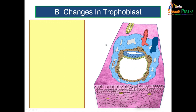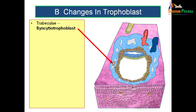Now let us see the changes happening in the trophoblast. We have the inner cytotrophoblast and the outer syncytiotrophoblast. The syncytiotrophoblast lying between the lacuna spaces is known as the trabeculae. These lacuna spaces are later invaded by the endometrial arteries and endometrial veins.